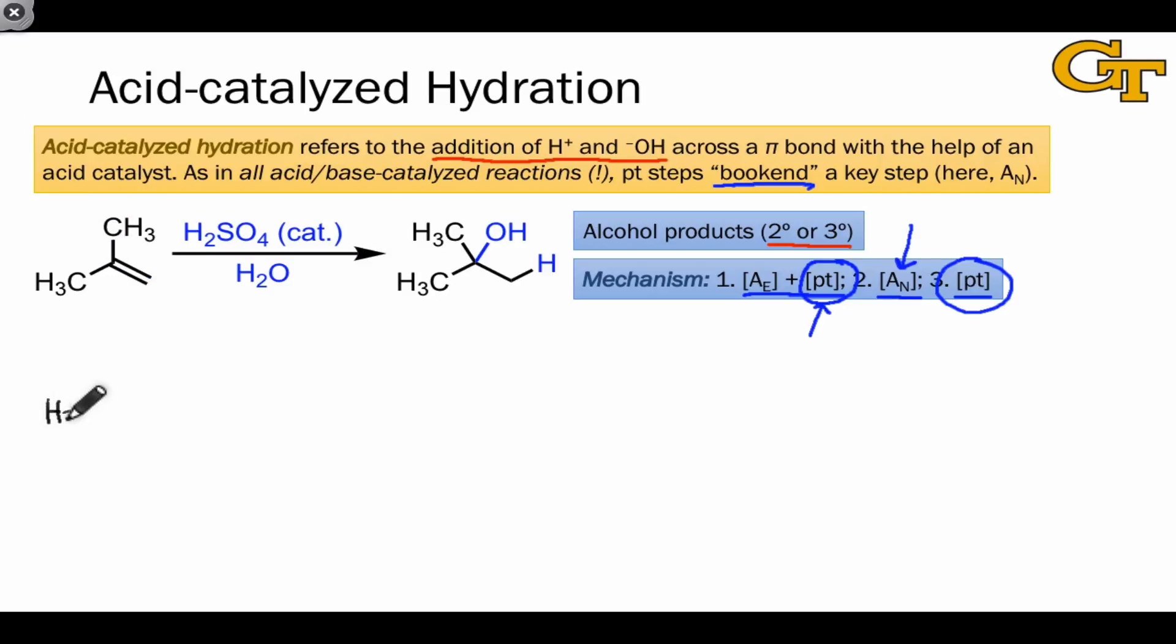In the first step of this mechanism, we have the typical A-sub-E plus proton transfer. It's an A-sub-E or electrophile association step from the perspective of the alkene, but it's a proton transfer step from the perspective of the acid catalyst. As in hydrohalogenation, this step generates a carbocation intermediate. Here, it's a tertiary carbocation.